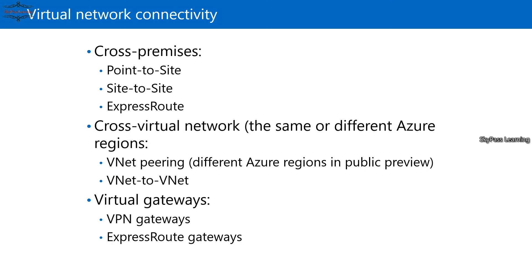Site-to-site VPN allows you to configure an IPsec tunnel between the Azure network and your on-premises network. This is the most commonly used option. Point-to-site is for smaller organizations with a limited number of systems, while site-to-site is used when connecting on-premises to Azure. It has a throughput of normally up to 1.25 Gbps on shared connections.